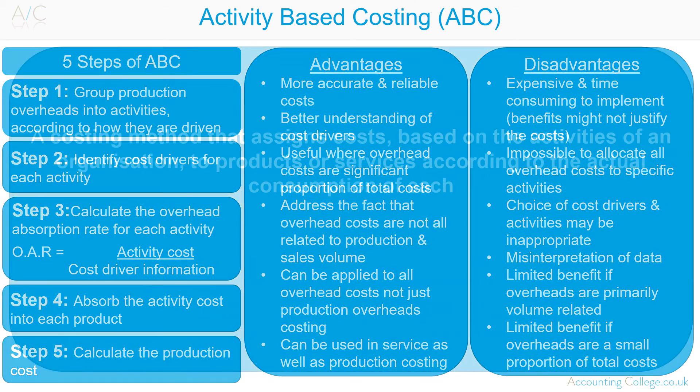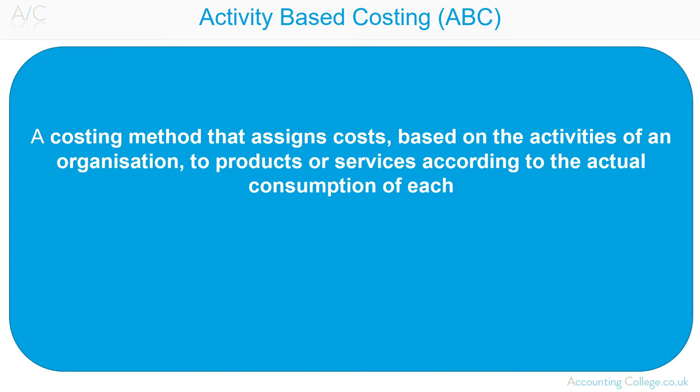Activity-based costing is a costing method that assigns costs based on the activities of an organisation to products or services according to their actual consumption of each. The aim of activity-based costing is to calculate the full production cost of a unit or a product. It is an alternative costing method to absorption costing.